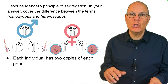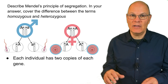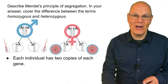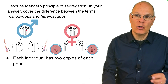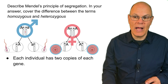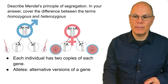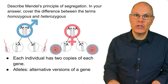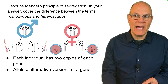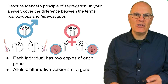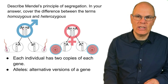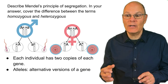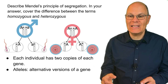Every individual has two copies of each gene. Those copies are located on the chromosomes that are organized into homologous pairs. Alleles are alternative versions of those genes that might have different DNA sequences, which will produce proteins that have different amino acid sequences.